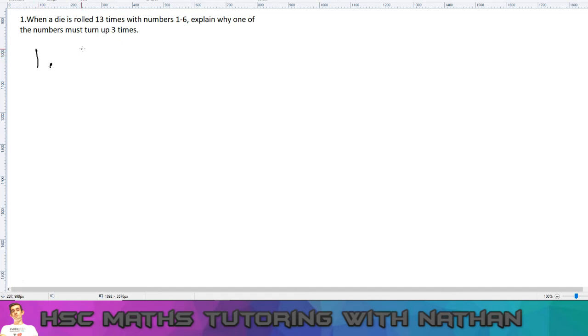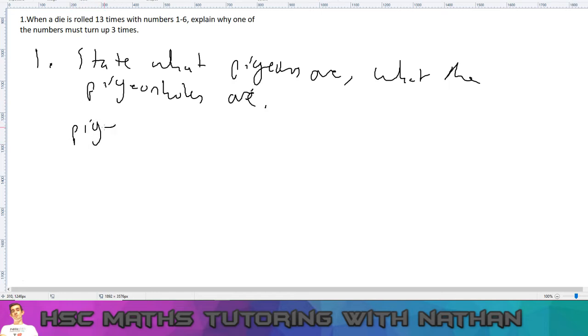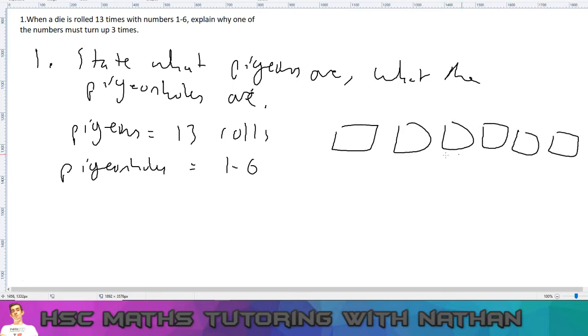So straight away, seeing how this is related to pigeonhole principle isn't straight obvious. So what you want to do is state what the pigeons are and what the pigeonholes are. If you actually state that, it's going to help you a lot. So here, the pigeons is the 13 rolls, right? And the pigeonholes are the 1 to 6, the numbers that can be shown.